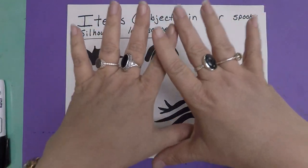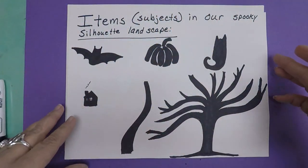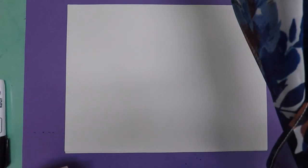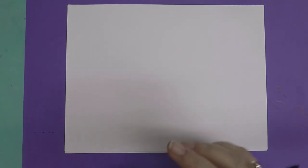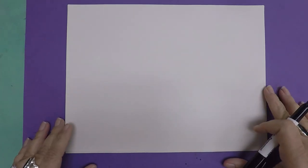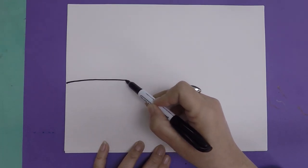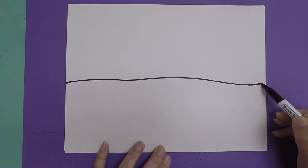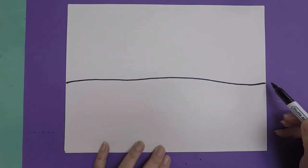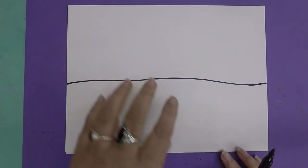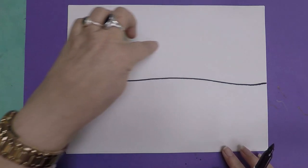We're going to have behind them a sunset or a moonrise that is going to have a spooky feel. To start with, take your pencil and draw a line across the middle of your paper. This is our horizon line. The sun sets back here, and this is our ground. This is our sky.